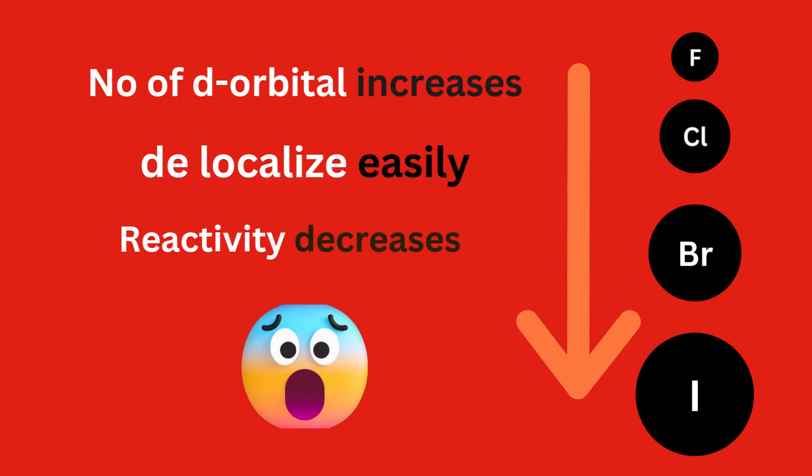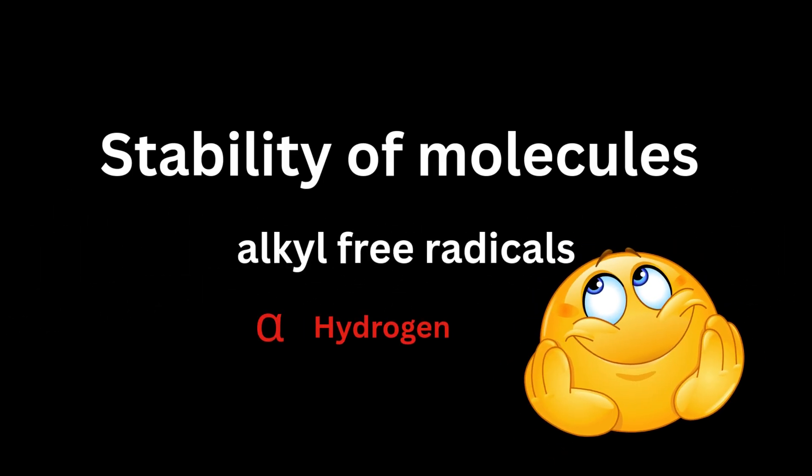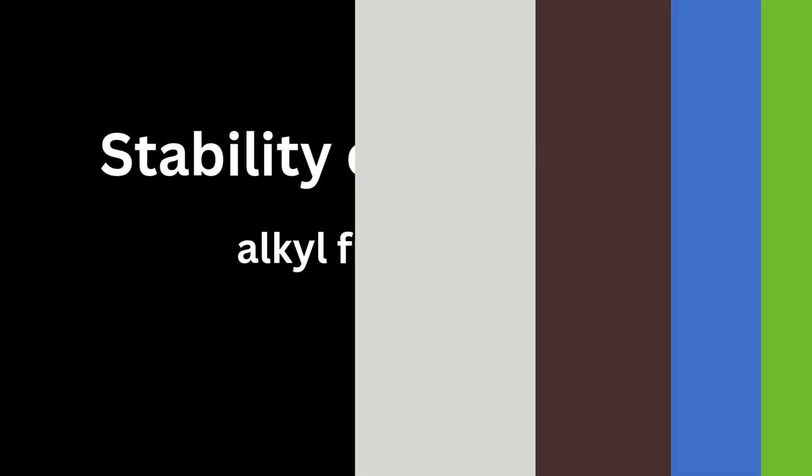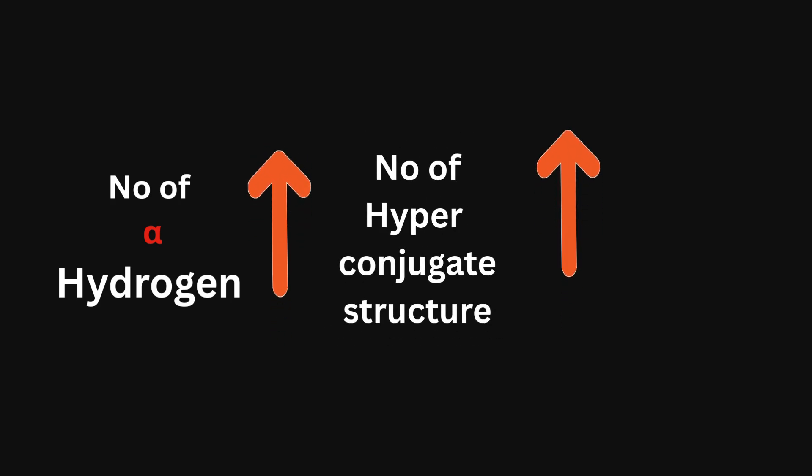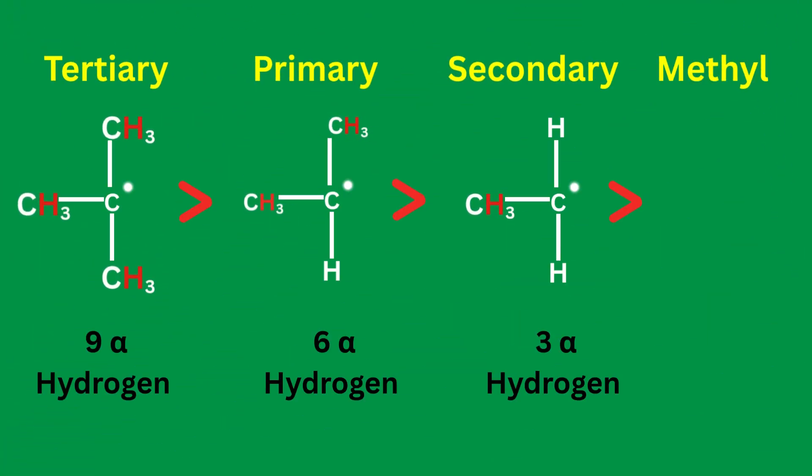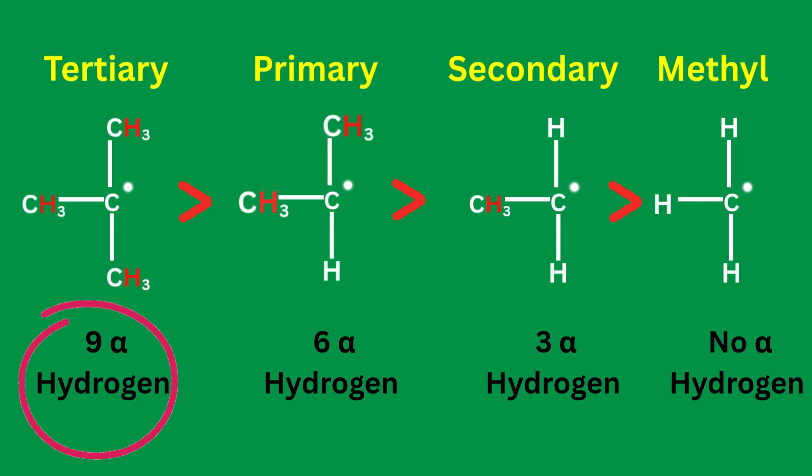Let's discuss the stability of molecules with the example of alkyl free radicals. It depends on the number of alpha hydrogens. Greater the number of alpha hydrogens, greater the number of hyperconjugation structures formed and greater the stability. Tertiary free radical is more stable than primary, secondary and methyl because it has maximum number of hydrogens. So, it forms maximum number of hyperconjugated structures and it becomes more stable.